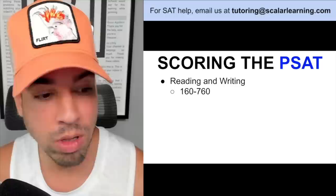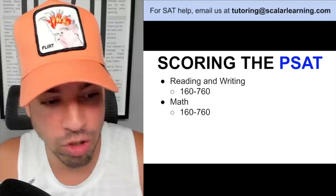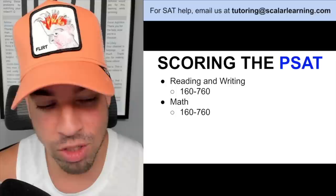Now let's talk about how the PSAT is scored. Reading and writing are scored together out of a maximum of 760 — compared to 800 on the regular SAT. The two math sections are also merged, with a maximum of 760, giving a total max composite score of 1520.